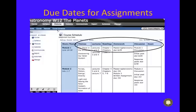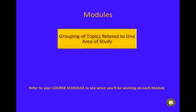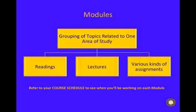Now that you have your syllabus and course schedule, you're ready to begin your course. Do this by simply going through the modules. In the modules tab you'll see all the modules listed. A module is a group of topics related to one area of study, typically with readings, lectures, and various kinds of assignments. Refer to your course schedule to see when you'll be working on each module.